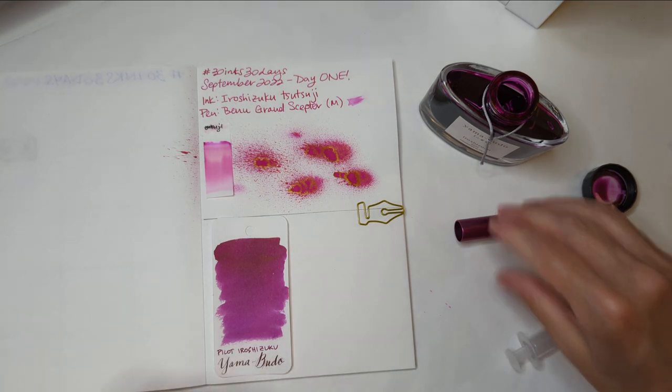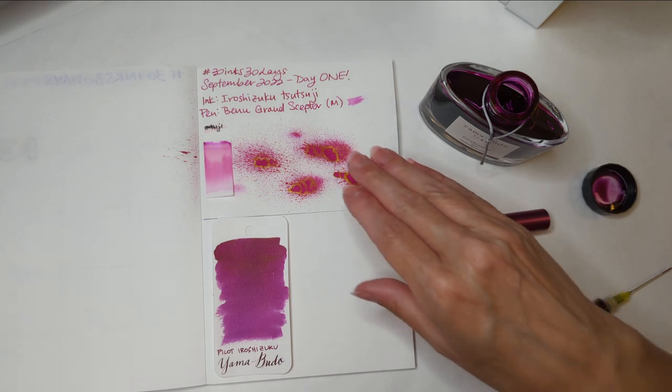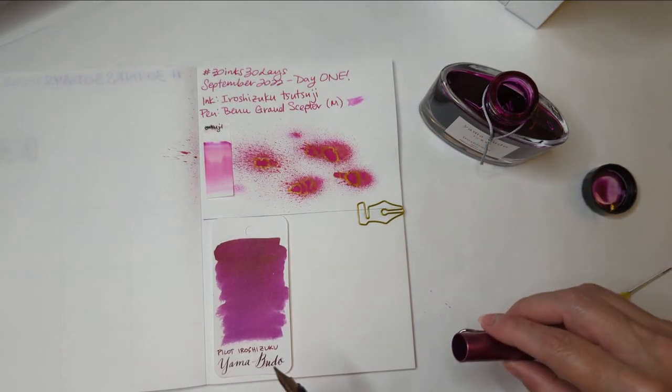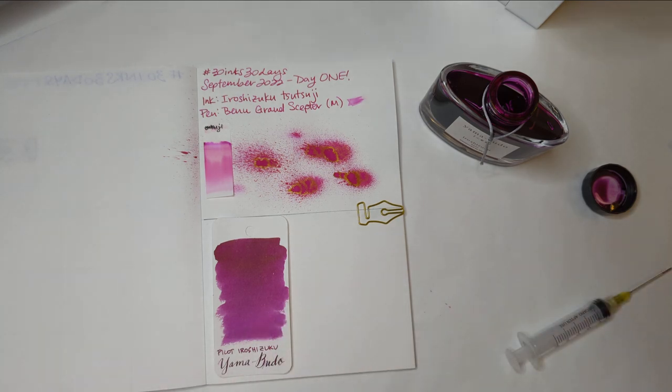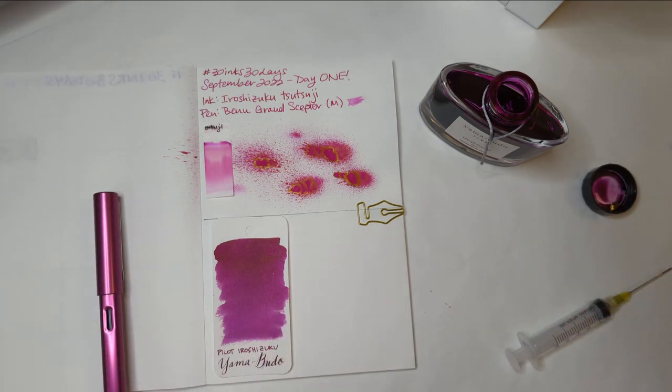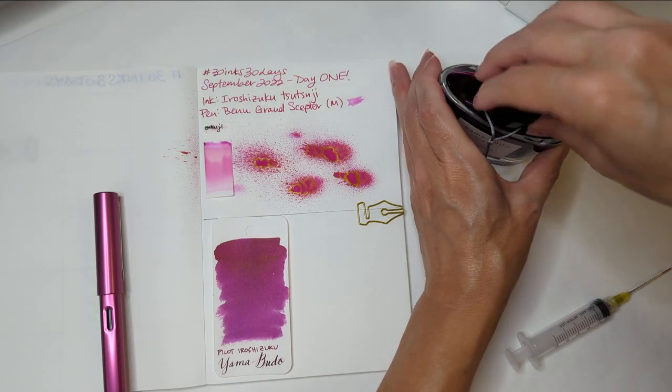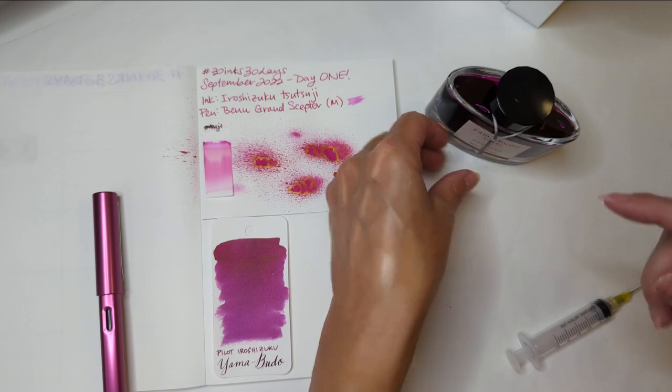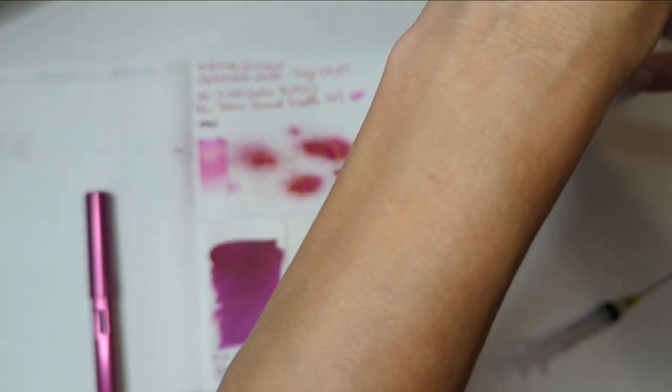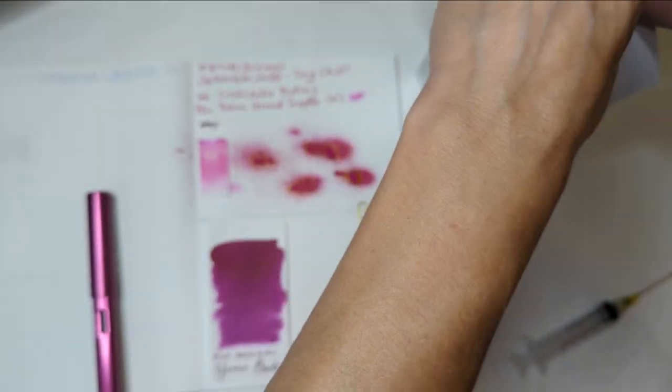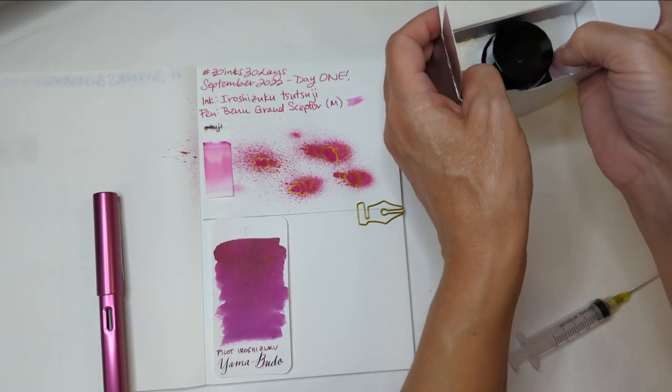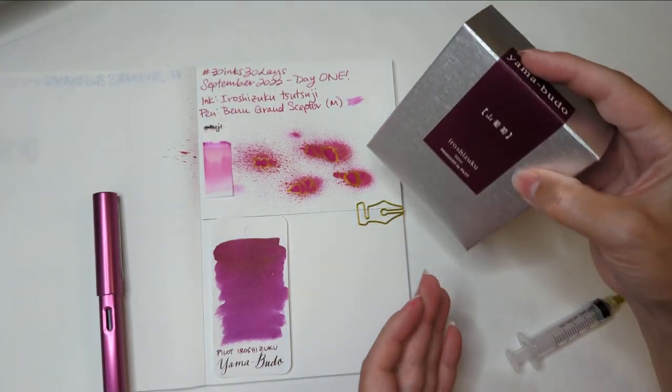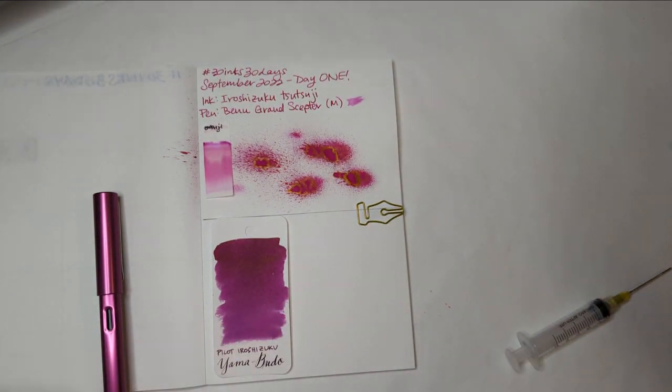So it's funny. Tutsuji was, among, it's the first expensive bottle. No, that's not true. I think Emerald of Chivor was the first expensive bottle of ink I bought. But this was probably the second. And Yamabudo I fell in love with around the same time. But I was like, no Maria, you don't need to spend that much money on ink. And so I bought another ink that was supposed to be like, oh it's going to be just as good. But I had to get it. It's lovely.